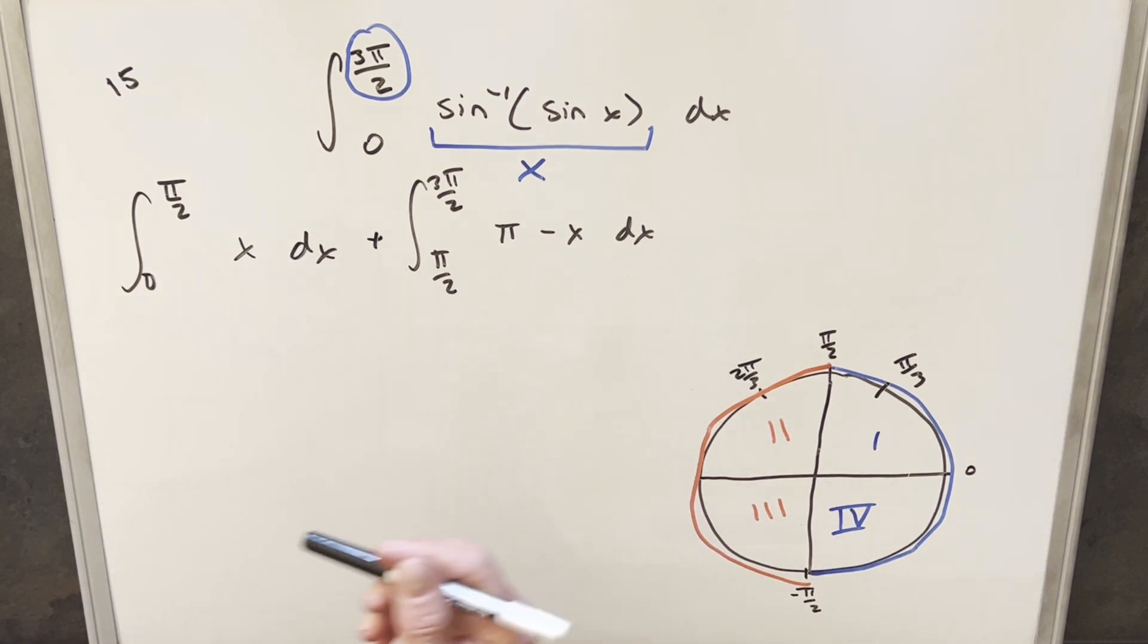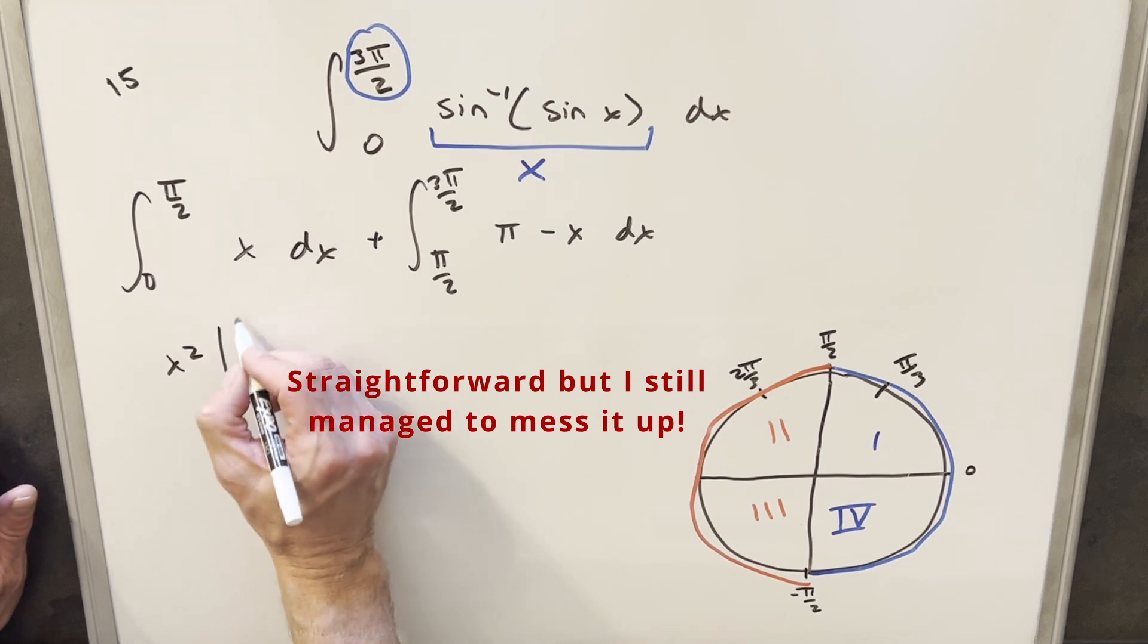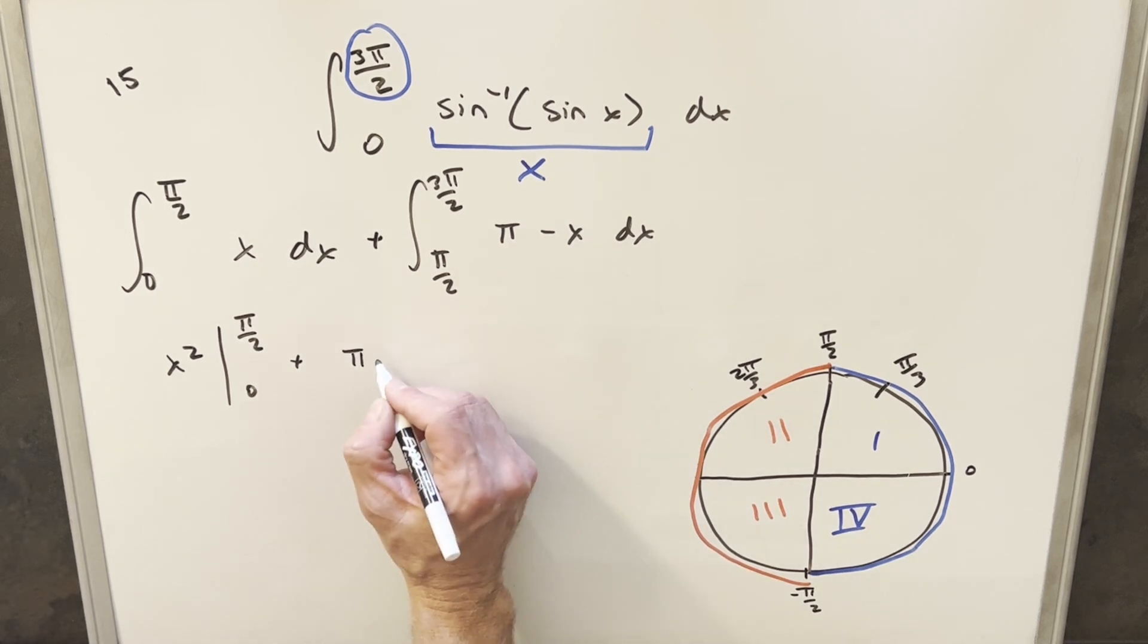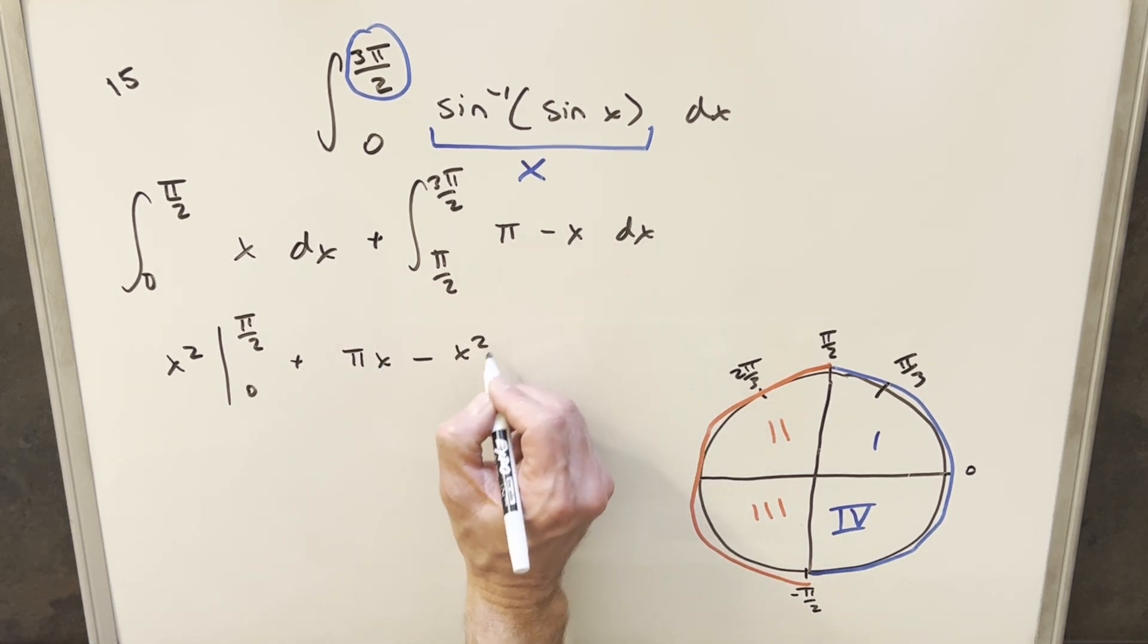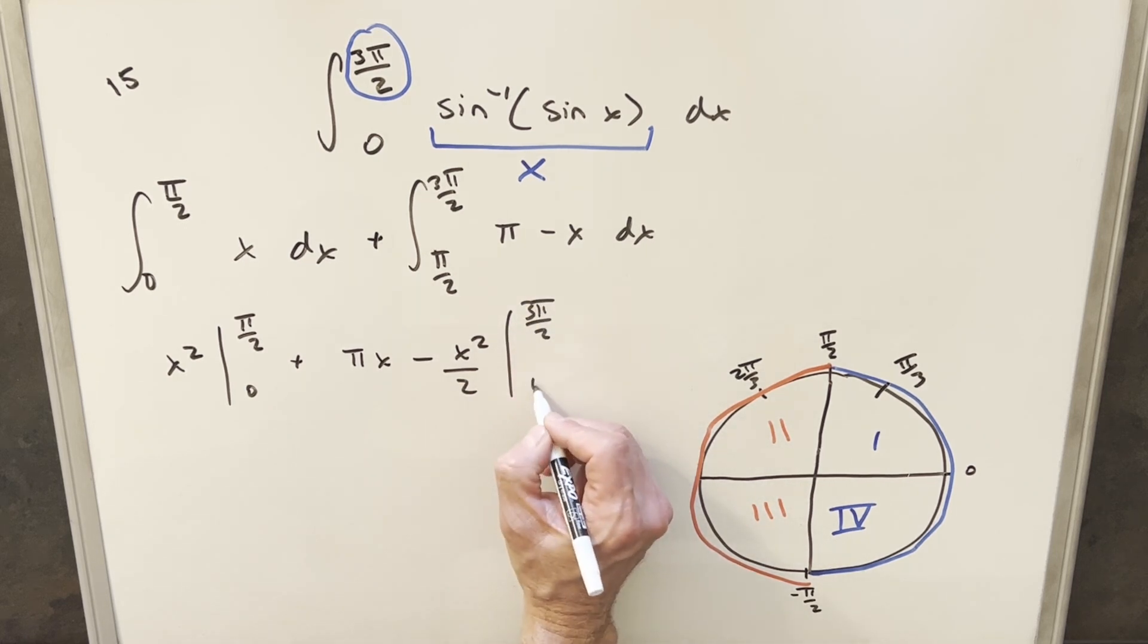So I'll write that in here, and we can integrate that. From here, integrating this is going to be pretty straightforward. So first we're just integrating x, and so we're going to have x²/2 from 0 to π/2. And then here, integrating this, integral of π is going to be just πx. And then here, it's going to be minus x²/2. And we just need to evaluate this from π/2 to 3π/2.